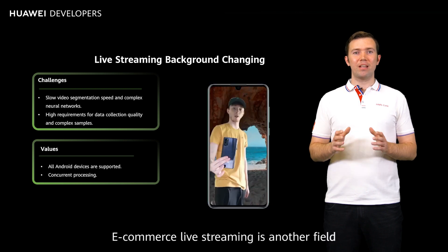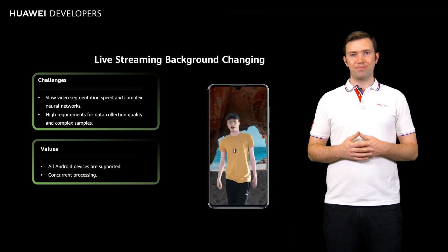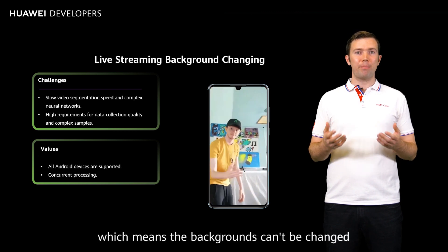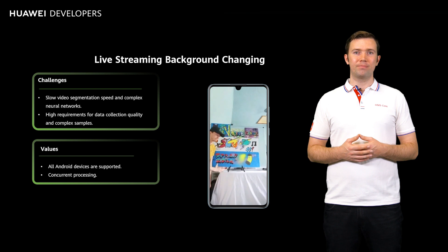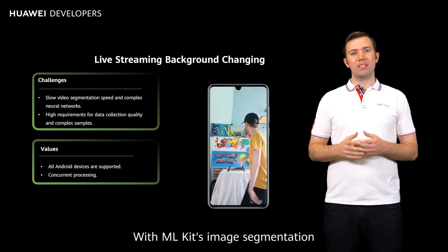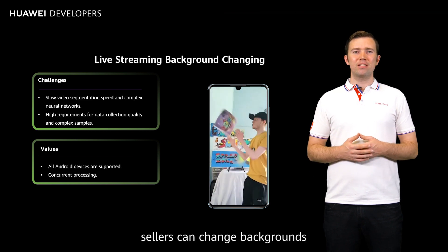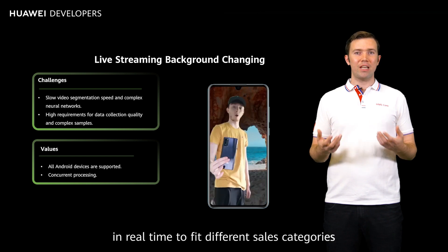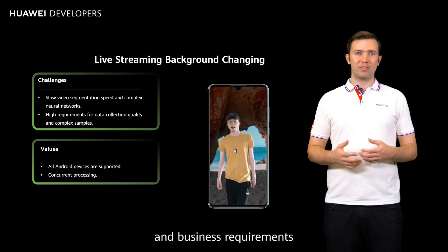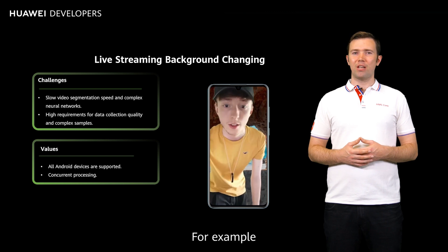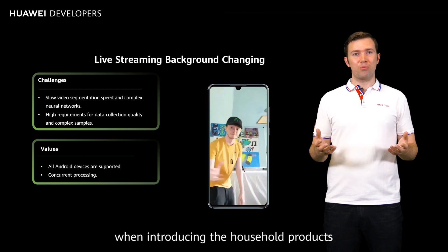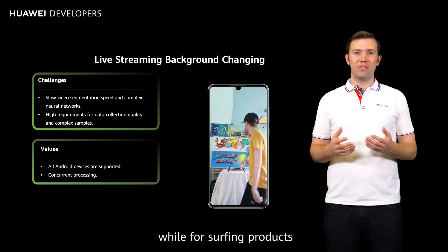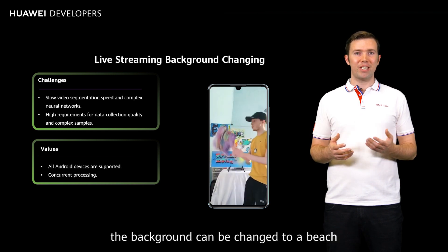E-commerce live streaming is another field that's seeing huge growth. Many sellers do this in live streaming rooms, which means the backgrounds can't be changed. With ML Kit's image segmentation, sellers can change backgrounds in real time to fit different sales categories and business requirements. For example, when introducing household products the background can be a home setting, while for surfing products the background can be changed to a beach.